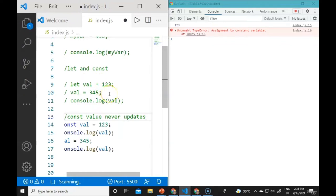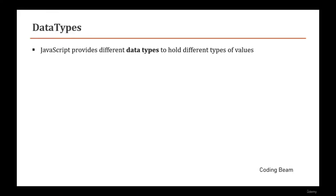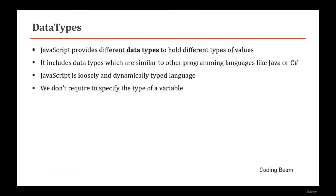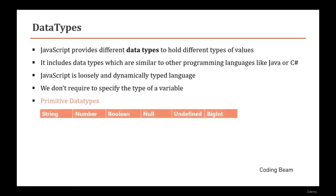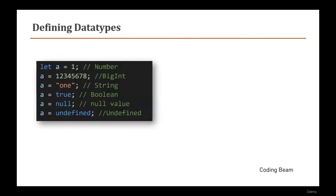Now we will move on to data types. JavaScript provides multiple data types to hold different types of values, including string, boolean, and number. JavaScript is a loosely and dynamically typed language, so we do not need to specify the type of a variable. There are two categories: primitive types and non-primitive types.